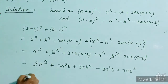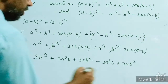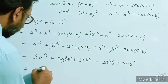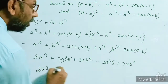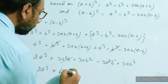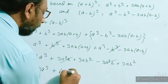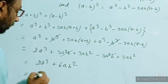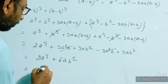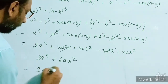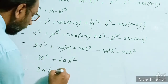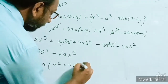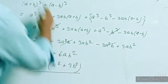In this step we cancel -3ab² and +3ab², so we have 2a³ + 6ab². If you want to take a common factor, the common factor is 2a. So the factored form is 2a(a² + 3b²). This is the solution of this question.